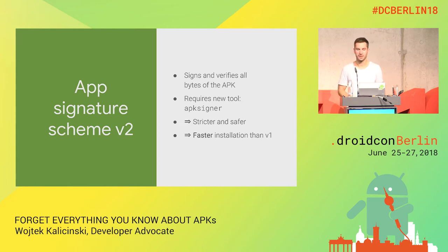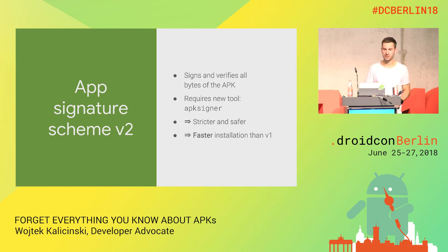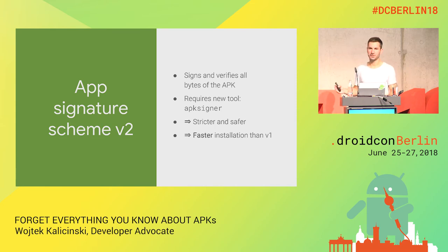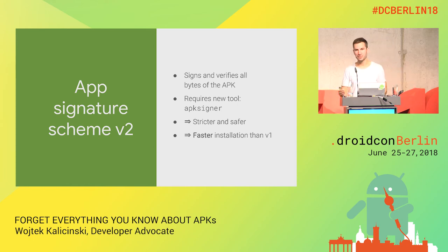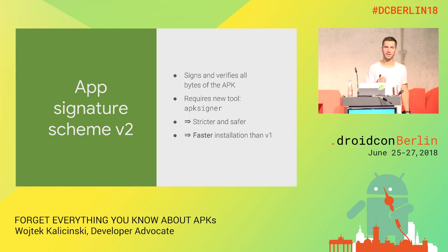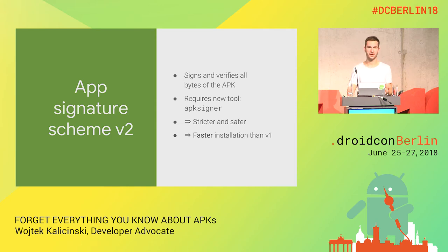Security is important, so at some point we introduced a new app signature scheme called v2. The previous signature hashed the uncompressed contents of files, so installing a 100-meg APK meant uncompressing everything just to verify the installation. The new v2 scheme was not only more secure — stricter and safer, verifying all bytes in the APK without looking at files individually — it was also orders of magnitude faster because it only went through the bytes of the zip file without needing decompression.